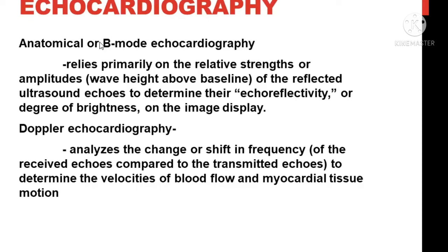B-mode is 2D — it tells you from two dimensions and you see the size and the differences from right to left, and the measurements of different structures. Then there is Doppler, which is based on the Doppler shift or frequency difference. You use it for different velocities of blood flow — there are different flows in the atrium, the ventricles, and the valves with different velocities, and based on that velocity you make your assessment.